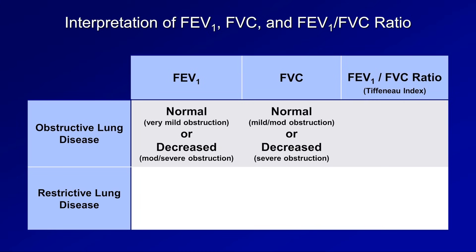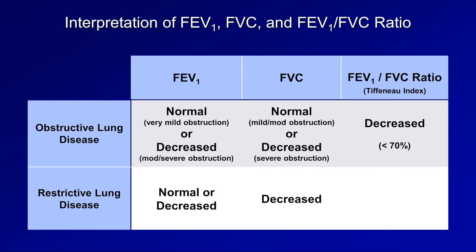As a very consistent rule in obstructive lung disease, the FEV1 will decrease to a greater degree than the FVC. Therefore, the ratio of the two will decrease below the normal value of 70% — a ratio sometimes called the Tiffeneau index. In restrictive lung disease, the FEV1 is either normal or decreased and the FVC is decreased. Since the FVC is usually decreased to a similar or greater degree than the FEV1, the ratio is either normal or increased. Using the FEV1 to FVC ratio to distinguish obstructive from restrictive lung disease is the single most important thing to remember about interpreting PFTs.